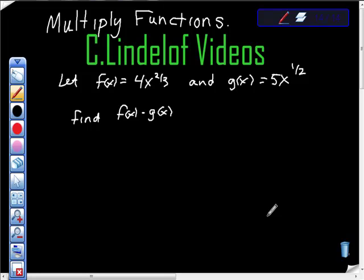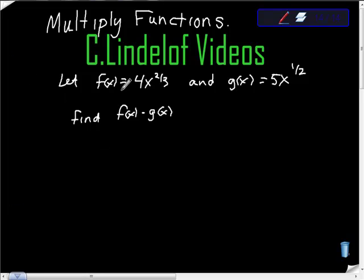C. Lindelof Videos: Multiplying functions. We're given f(x) = 4x to the two-thirds power and g(x) = 5x to the one-half power, and we're asked to find f(x) times g(x).